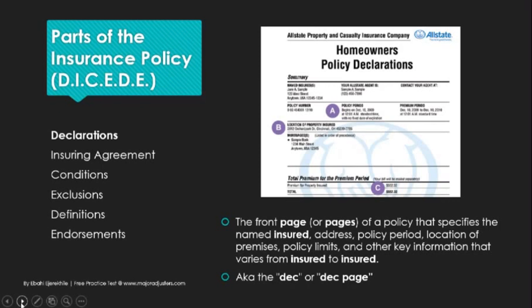This is your dec page. It houses your name, address, the policy period for however many months, the location of the premises, and your policy limits. For example, in most states the auto limits might be 25/50, or depending on what state you are in, it may be 10 or 15 — and we're talking about thousands of dollars here. The limits are how much the insurance company will pay — the maximum the insurance company will pay. This declarations page is also known as the DEC or dec page.